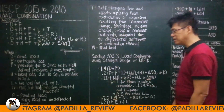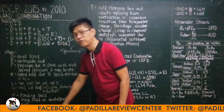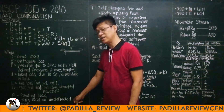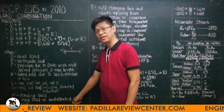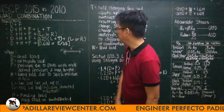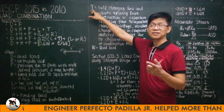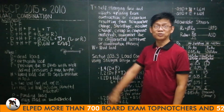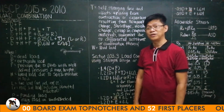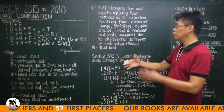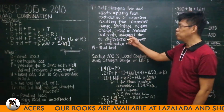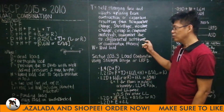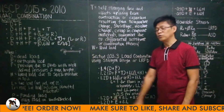R is the rain load on the undeflected roof. T is taken from the word 'temperature' — it represents loads caused by temperature changes, but not limited to them. It could also be due to shrinkage, creep of the material, movement due to differential settlement, or any combination of these. W is the wind load.